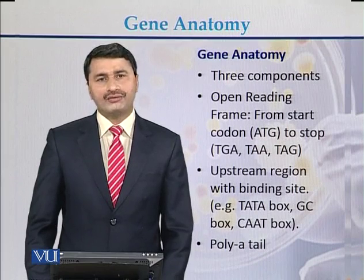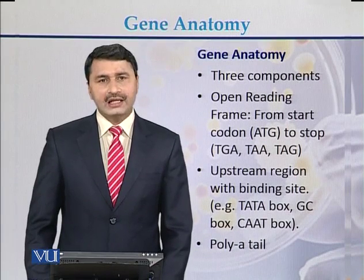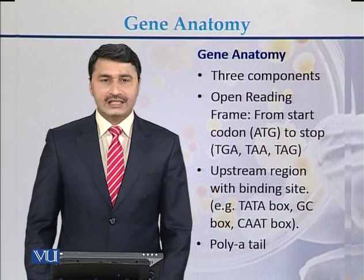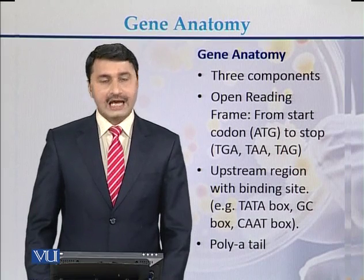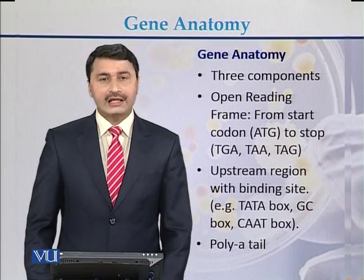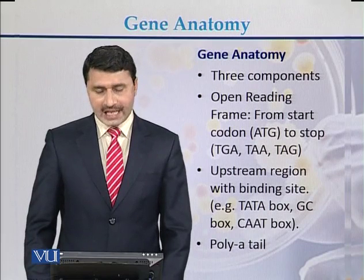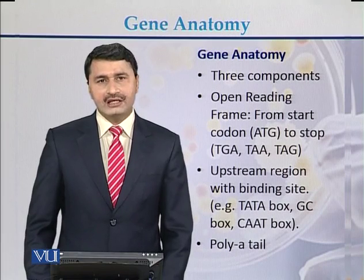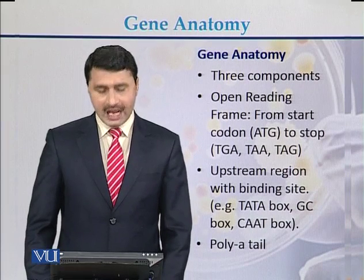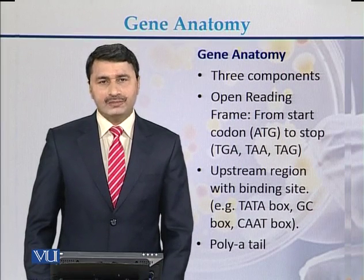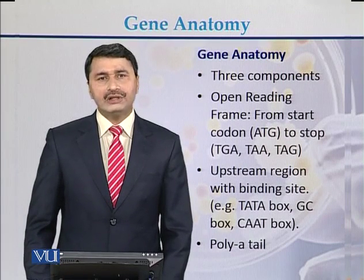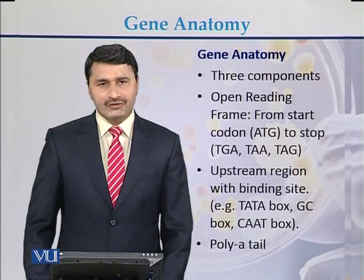The second main component of the gene is the upstream region with binding sites — in other words, the TATA box, GC box, and CAT box, which are present towards the upstream region of the gene. The third main component of the gene is the poly A tail, which is present at the three-prime end of the gene. So the three main components are: open reading frame, upstream sequences, and the poly A tail.